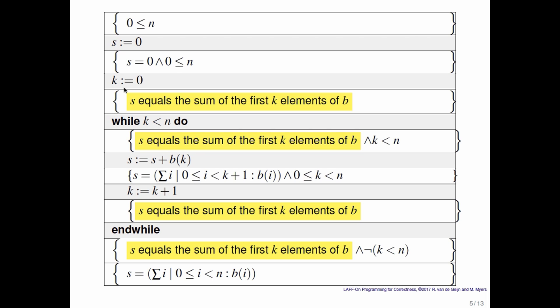Now notice that if we ever get into the situation where the loop guard becomes false, then we come out of the loop. But no computation happened between the assertion at the bottom of the loop, s equals the sum of the first k elements of b, and the check that we did to see whether we should stay in the loop, k less than n. So that means that when we come out of the loop it's again the case that s equals the sum of the first k elements of b. But now it's no longer the case that k is less than n.